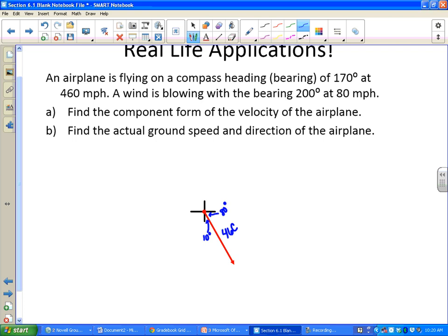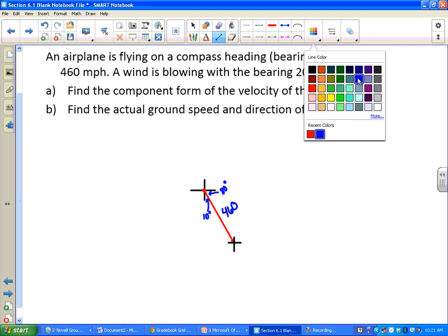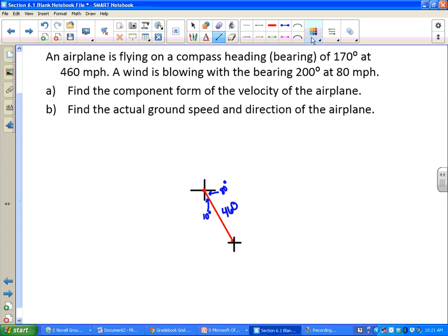Now a wind is blowing with the bearing 200 degrees at 80 miles per hour. So now I'm going to put that vector at the end of this first vector. I'm going to draw a new compass here at the end because I'm doing a compass bearing. I'm going to make a new vector for wind, let's make it green. A bearing of 200 starts zero here, goes around 180, and then goes 20 more, so that puts it right here. This vector should be much shorter than the other vector because 460 compared to 80 miles per hour.